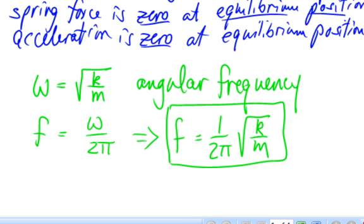That's going to be a very important formula that you're going to need to memorize for a mass on a spring. What is the frequency of oscillation? It's 1 over 2 pi times the square root of the spring constant divided by the mass.